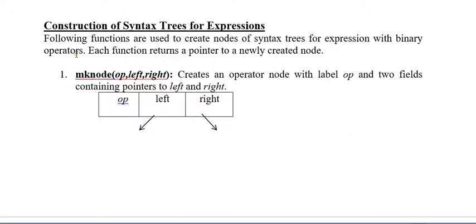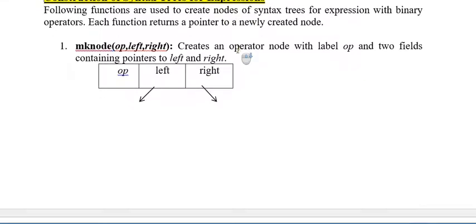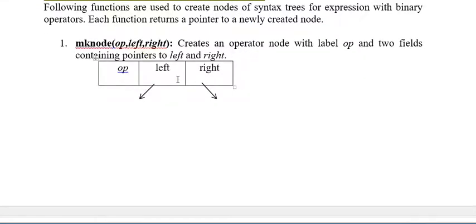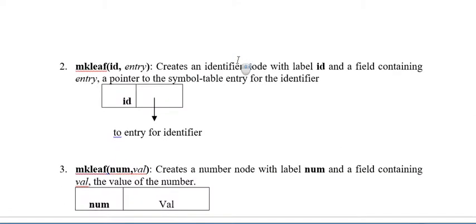Now construction of syntax tree for example. We will construct a syntax tree with example. Here we will use some functions. First function is mknode which is occupied with op means operations like plus, minus, multiplication, division etc. And left is the left side and right is the right side. The next function is mkleaf. Leaf means the last node which have id and entry. Entry is to enter the identity.